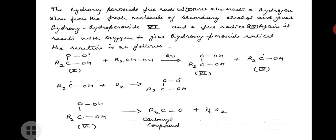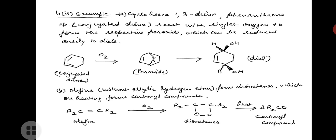Hydroxy hydroperoxide — compound 6 — on elimination of H2O2 forms the carbonyl compound. Now let us see the examples of mode B-second. The first example is cyclohexa-1,3-diene, phenanthrene, etc. — that is, conjugated dienes.